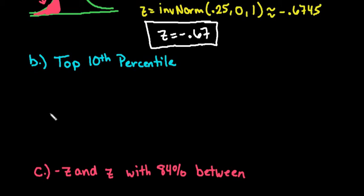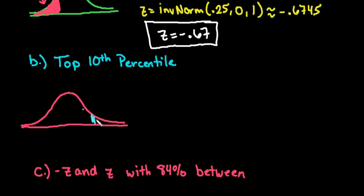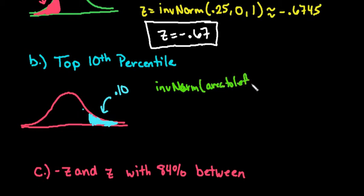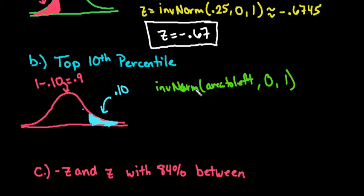For the top 10th percentile, you do have to be careful. Because we're looking for the top 10th, we're looking for an area of 10% up in the right tail. In your graphing calculator, when you put it in, the area has to be the area to the left — it will only find it if you give it the area to the left. So what we want to do is either do 1 minus 0.10 to get the area to the left, which is 0.90, or you can type 1 minus 0.10 directly.